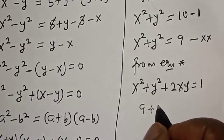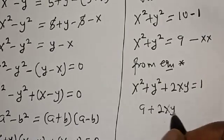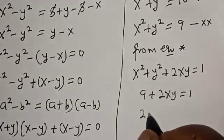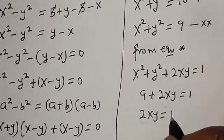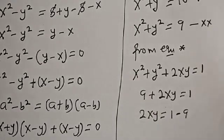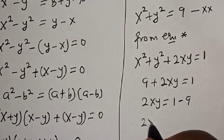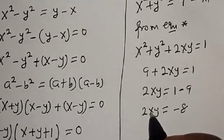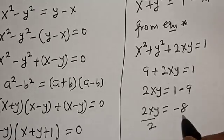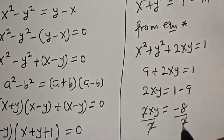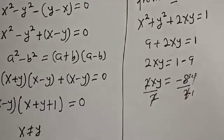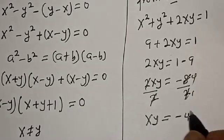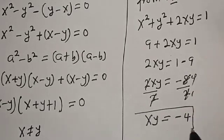We have 9 plus 2xy is equal to 1. Then 2xy is equal to 1 minus 9, so 2xy equals minus 8. Dividing both sides by 2, xy equals minus 4. And this is the final answer.